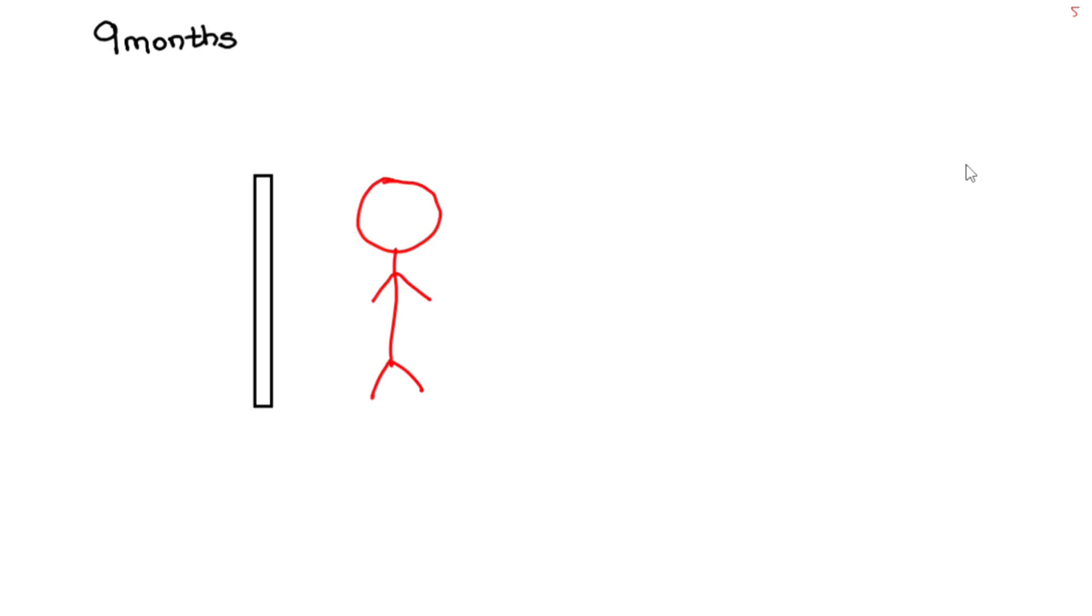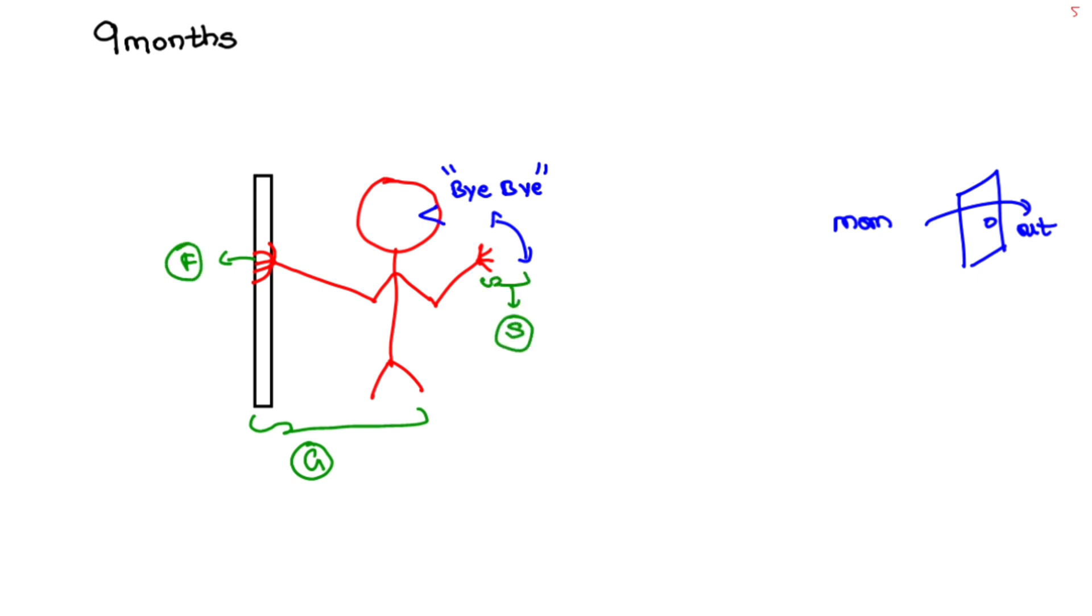Moving on to ninth month, it's story time. Baby now stands up with support using all its fingers. I'm mentioning it to represent immature pincer grasp. Says bye bye and waves at mother. Let's imagine mother is going outside.